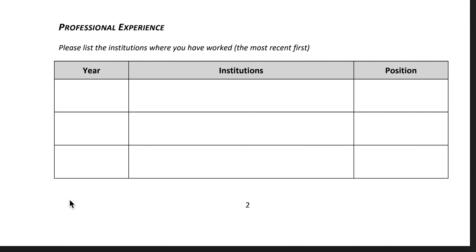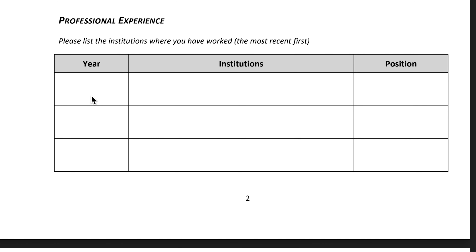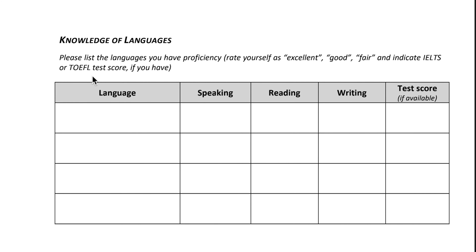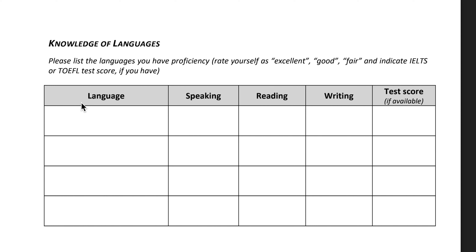If you have professional experience, give that information with the most recent first. Next is knowledge of languages: list the languages you have proficiency in and rate yourself as excellent, good, or fair, and indicate your IELTS or other test score if you have one. For example, write English and for speaking, reading, and writing select your level. If you have an IELTS certificate, write the test score here.